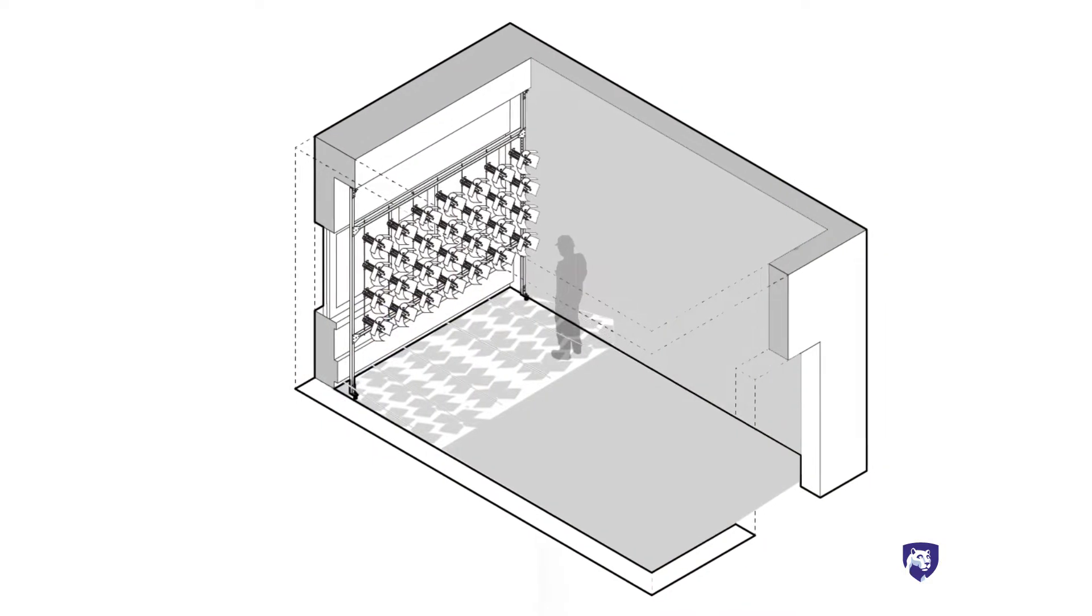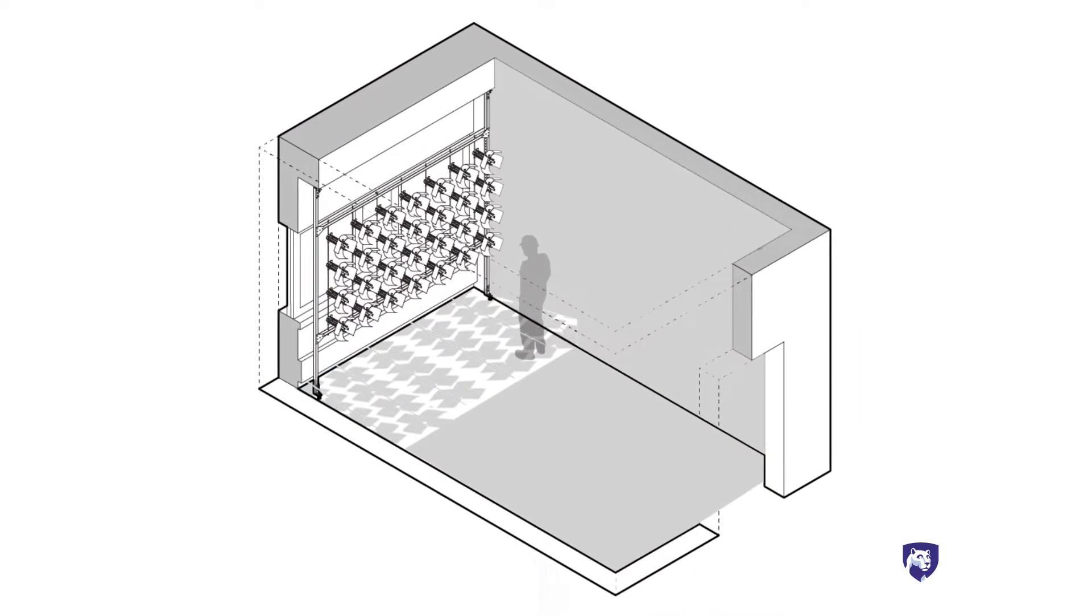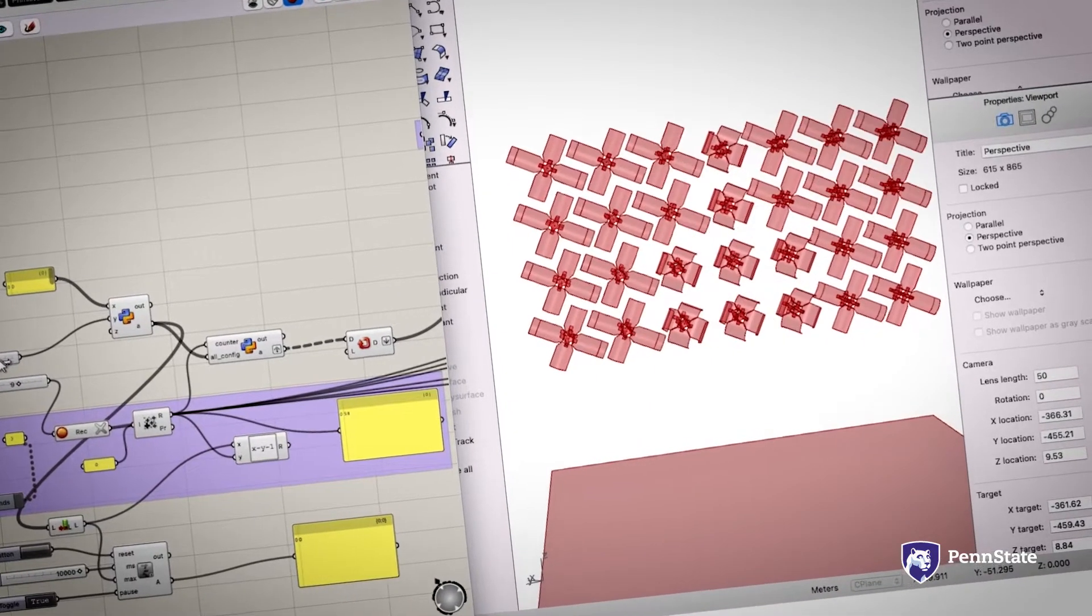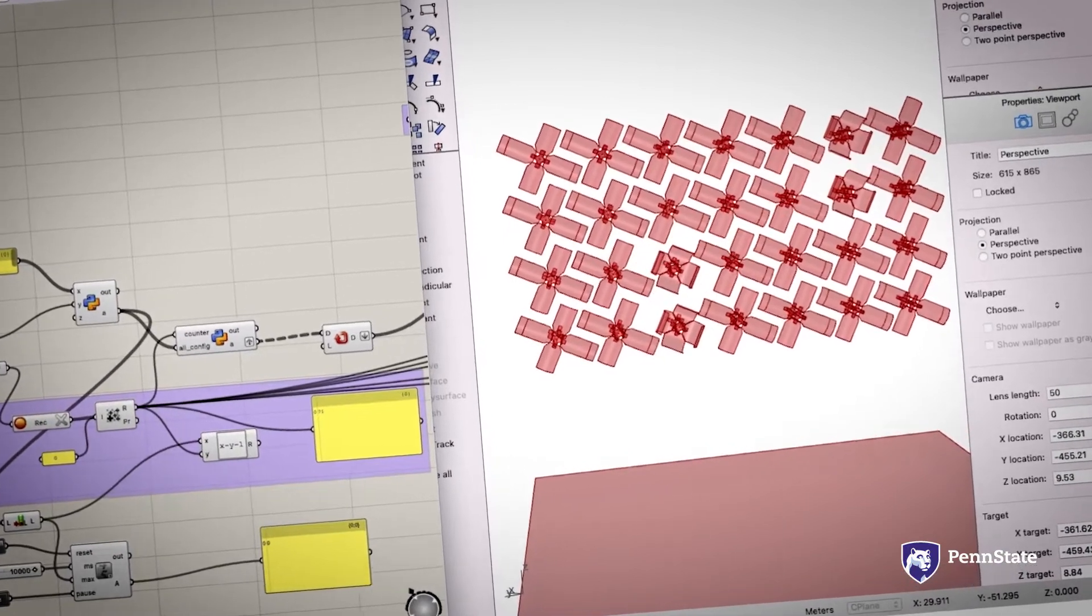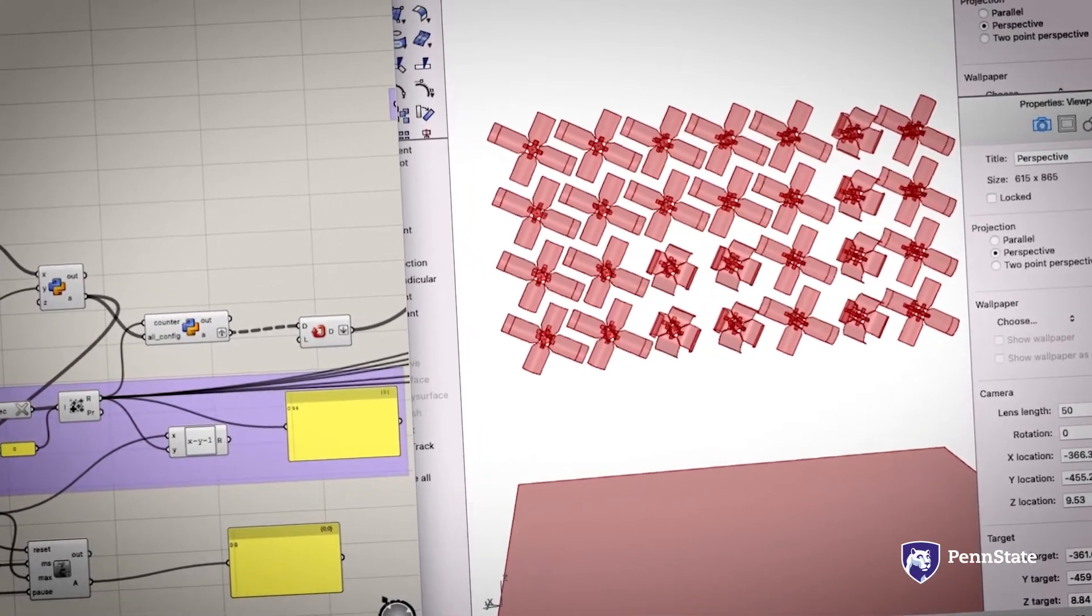A kinetic shading screen to be placed inside, behind windows, was designed. The screen is composed of several units that can open and close and therefore help regulate daylight indoors.